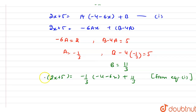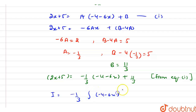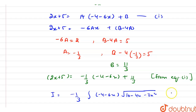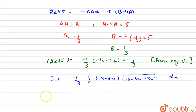Now I equals minus 1 by 3 into the integration of (minus 4 minus 6x) into under root of (10 minus 4x minus 3x squared) dx, plus 11 by 3 into I2. Let's call the first integral I1 and the second I2, as point number 2.